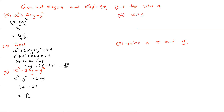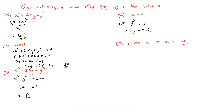The next sub-question asks: find the value of x minus y. Going back to the factorized form, (x minus y) squared equals 4. Therefore x minus y equals plus or minus 2, because the square root of 4 is plus or minus 2.